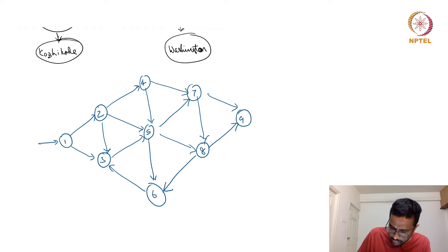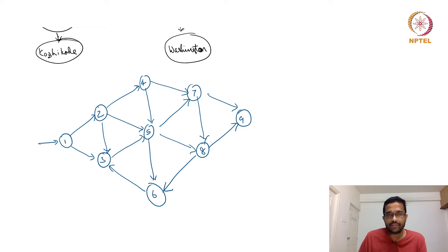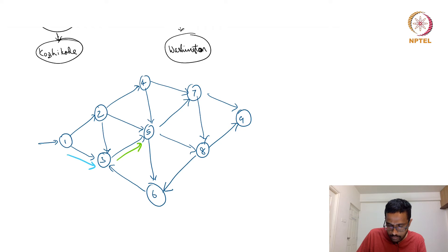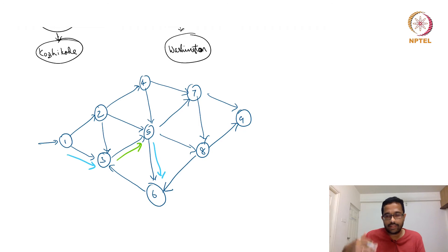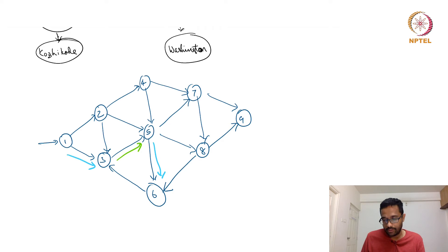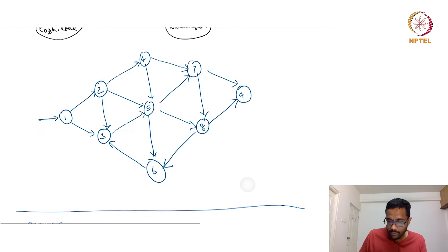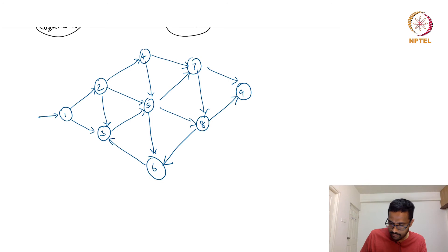In the graph example: player one starts from node 1. Player one can go to node 3; now player two has only one outgoing arrow from 3 and must go to node 5. Player one can then go to node 6, and player two is stuck — the only outgoing arrow from 6 leads back to node 3, which has already been visited. You cannot revisit a node, just as in the geography game you cannot reuse a place name. So player one wins.